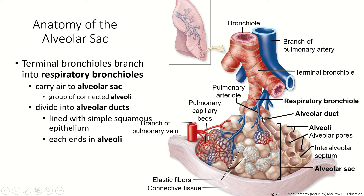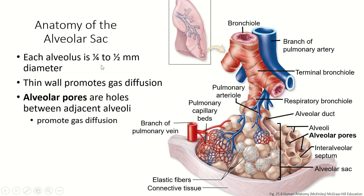The alveolar ducts have a wall of simple squamous epithelium, and each one ends in a group of alveoli. Each alveolus is only about a quarter to a half millimeter in diameter — these things are tiny. The wall is one cell thick, and each one is wrapped in a capillary bed, which are also tiny. That capillary bed is where gas diffusion actually happens. The pulmonary artery branches into arterioles that supply blood to the capillary bed, where it gets oxygenated by air diffusing across the wall of the alveolus. The oxygenated blood then travels through a venule to a branch of the pulmonary vein that carries it back to the heart.